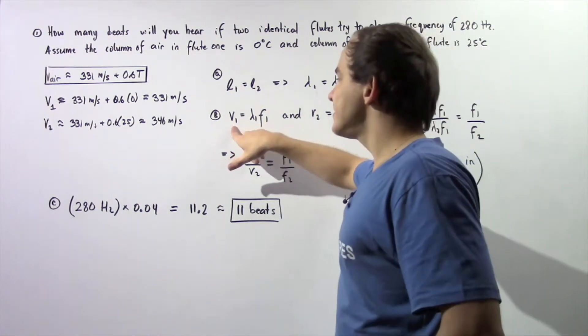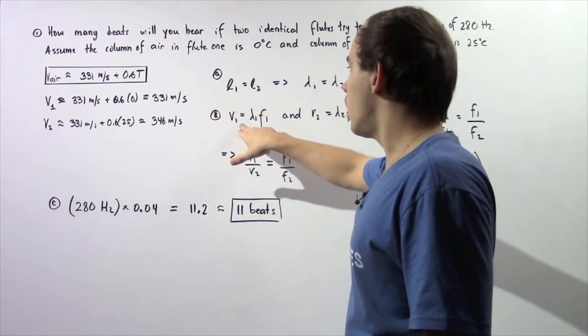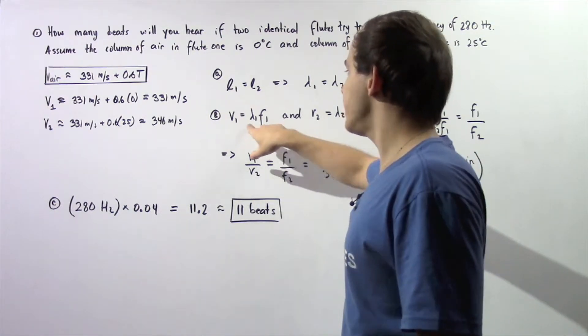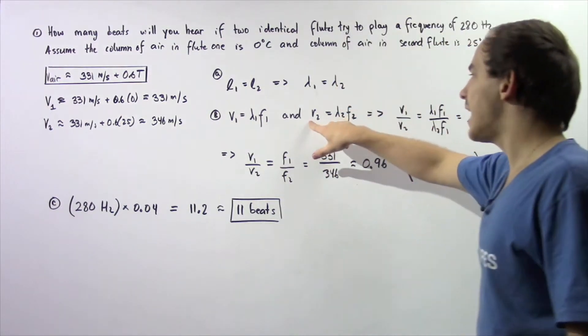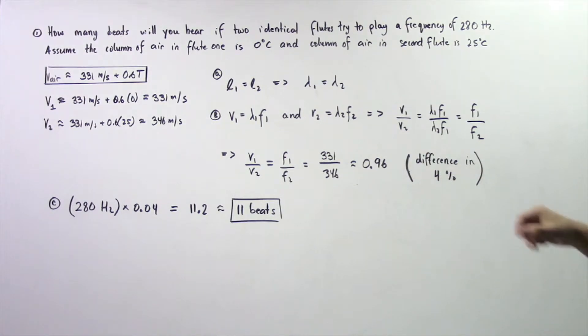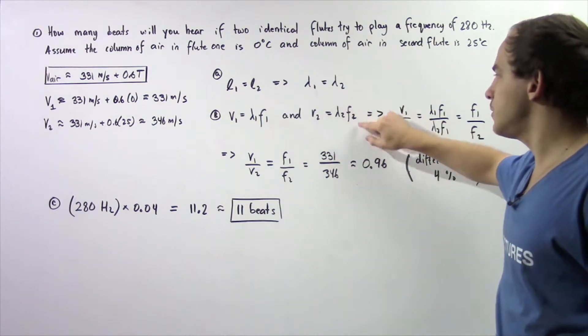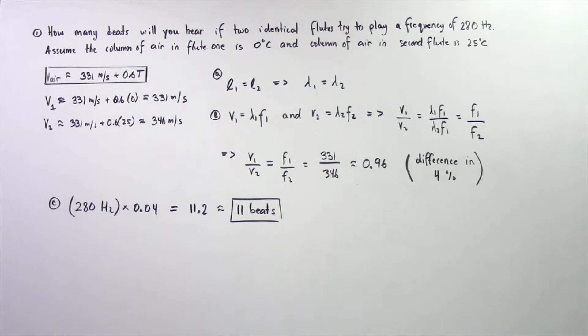So our velocity of the standing wave in flute one is equal to the product of the frequency one and wavelength one. And the velocity of the standing wave in flute two is equal to the product of the frequency two and wavelength two.